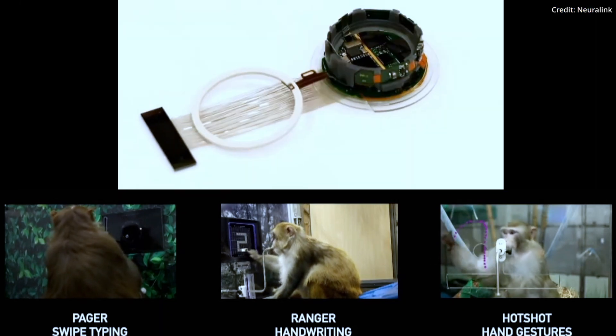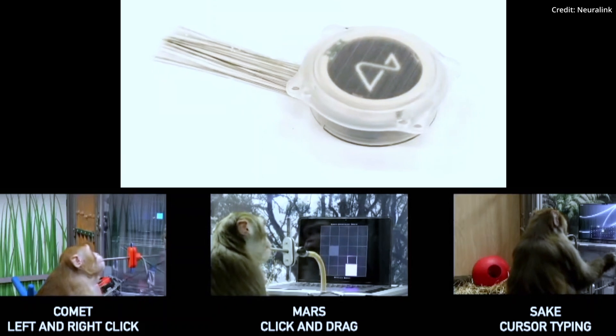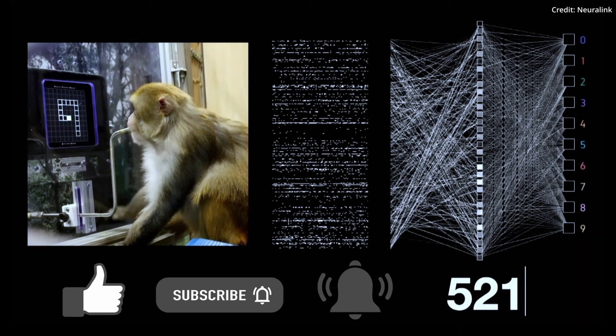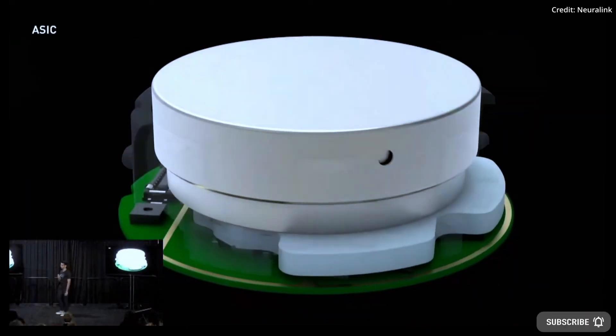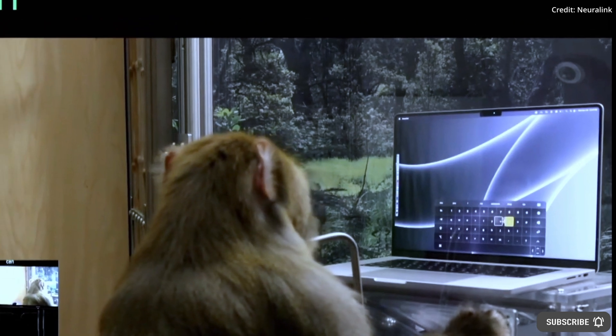Elon Musk reveals the Neuralink N1 Brain Computer Interface Device and its future capabilities. Neuralink's show-and-tell started with Musk reminding the audience that going from prototype to production is extremely difficult and emphasizing that Neuralink has been working hard to start human trials.